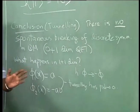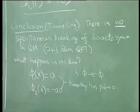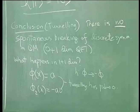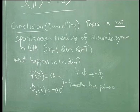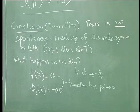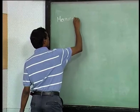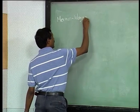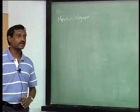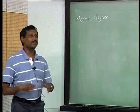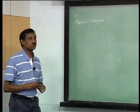Taking the continuum limit makes the tunneling probability go to zero. This theorem was originally developed in the context of statistical mechanical systems by Mermin and Wagner, and adapted to quantum field theory by Coleman — so we call it the Mermin-Wagner-Coleman theorem.